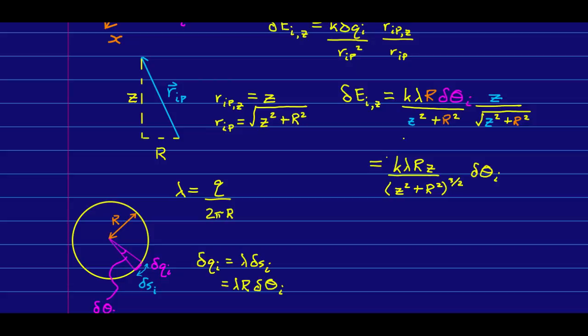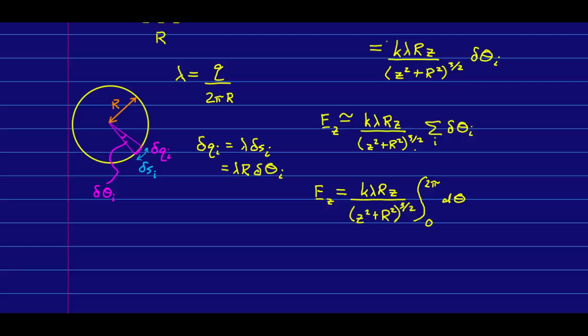And simplifying, I can pull out everything that's a constant, which is almost everything. Note that what we're going to integrate with respect to is theta as we look at all points around the ring. And so, there's only one place where theta appears. So, we just put everything together in our sum and then we let that sum go to an integral where we note that we're going to allow theta to vary from 0 to 2π to get all the way around the whole ring.